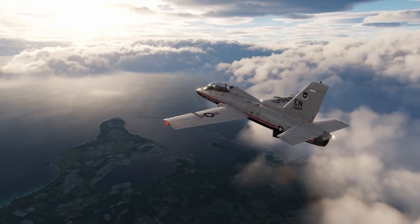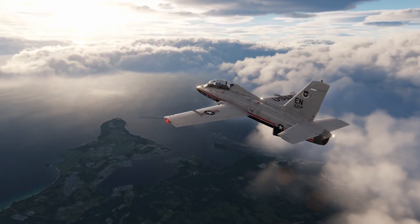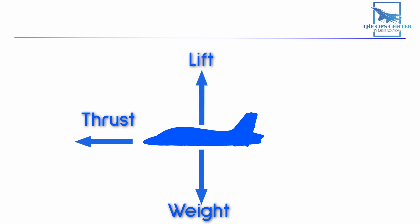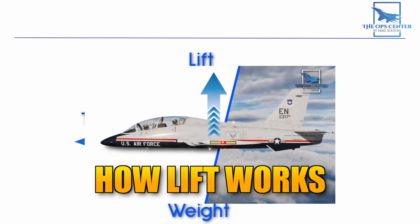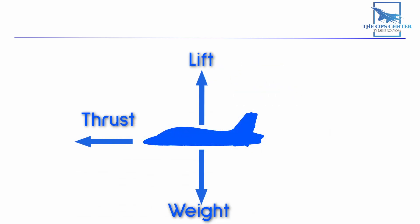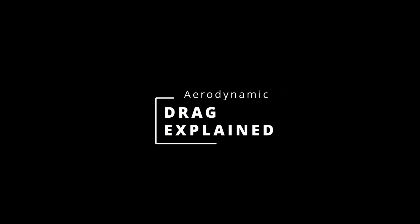There are four forces acting on an airplane that every pilot should know. Thrust propels the aircraft forward, weight or gravity pulls the aircraft down, and lift is the aerodynamic force keeping a plane airborne. But there's one last force acting on a plane that needs its own dedicated video, and that's drag. Want to know what causes it and how it affects flight? Then keep watching.